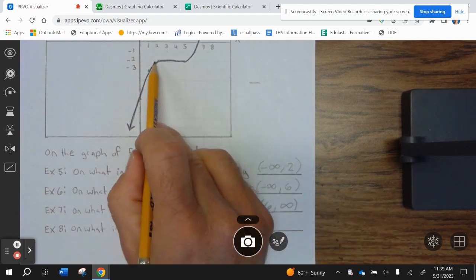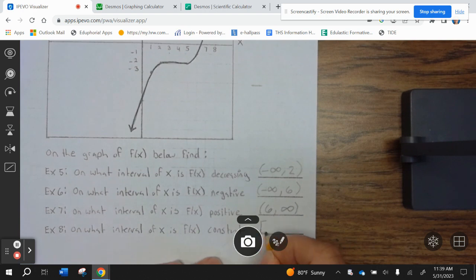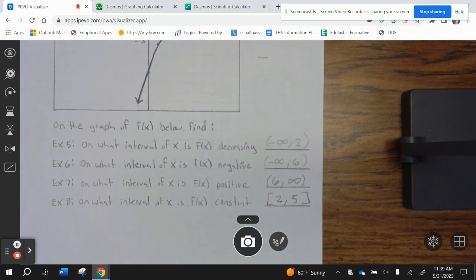And then it's constant between 2 and 5. Now, that includes bracket because it's constant at 2 and 5. Okay? Go ahead and finish up your example, start working on your assignment, and have a wonderful wildcat day.